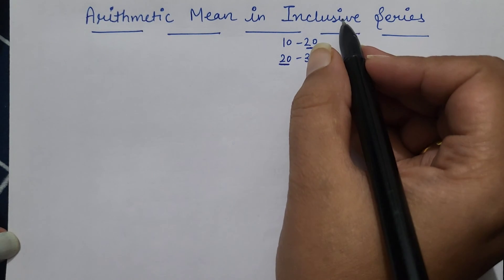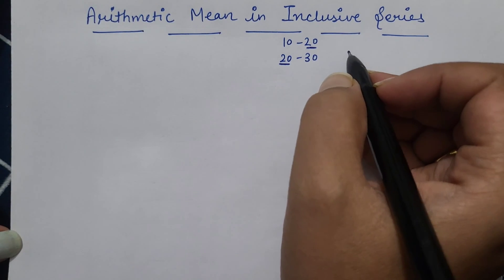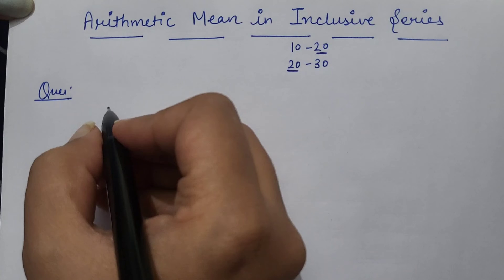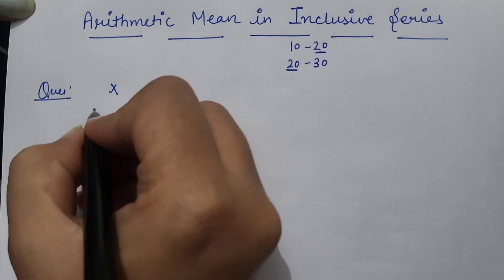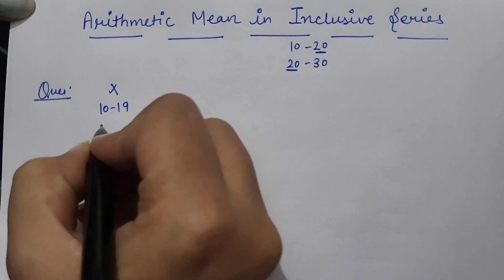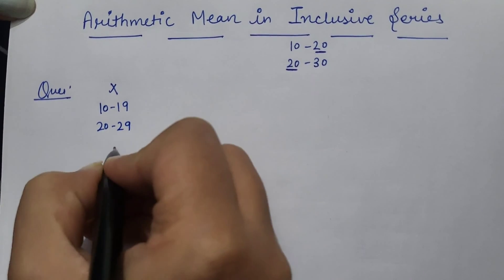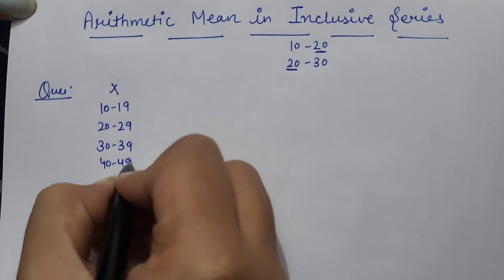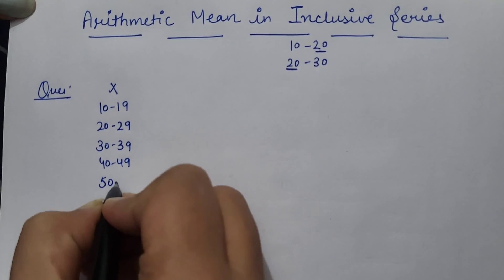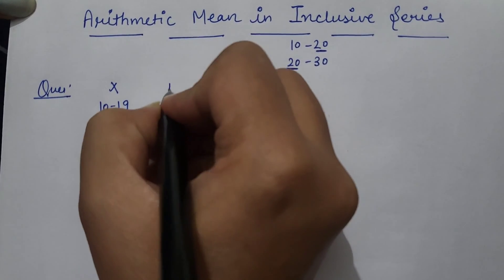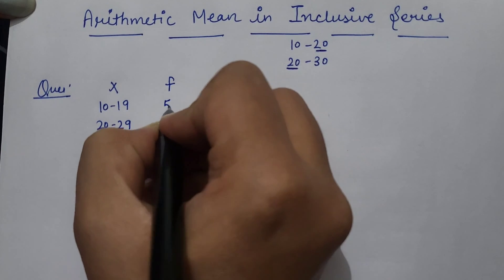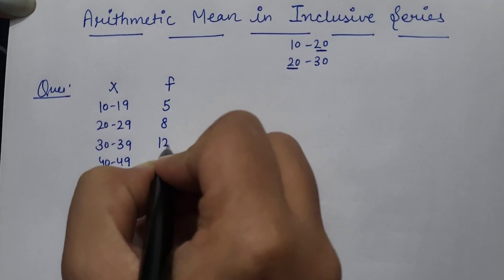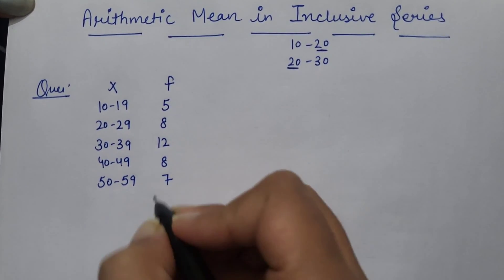Today we will cover inclusive series. Here I am taking the example. So 10 to 19, 20 to 29, 30 to 39, 40 to 49, and 50 to 59, and frequency is given as 5, 8, 12, 8, and 7.